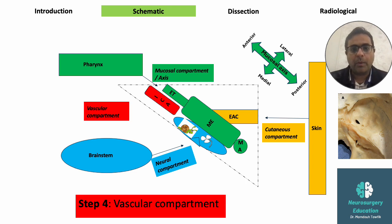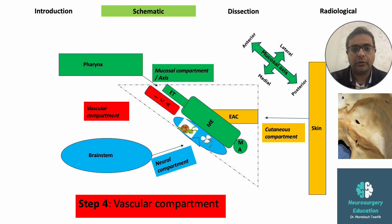The fourth compartment is the vascular compartment. It's made of the internal carotid artery, which ascends in the neck and penetrates the inferior surface, then turning anteriorly medial to the Eustachian tube, inside the petrous apex.